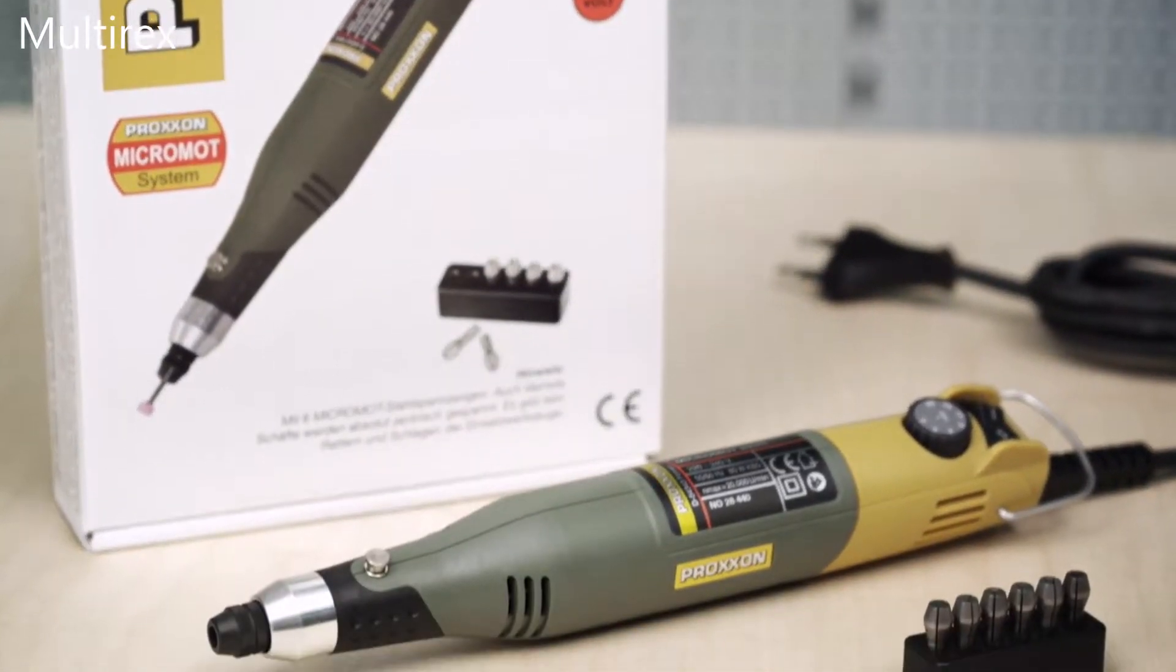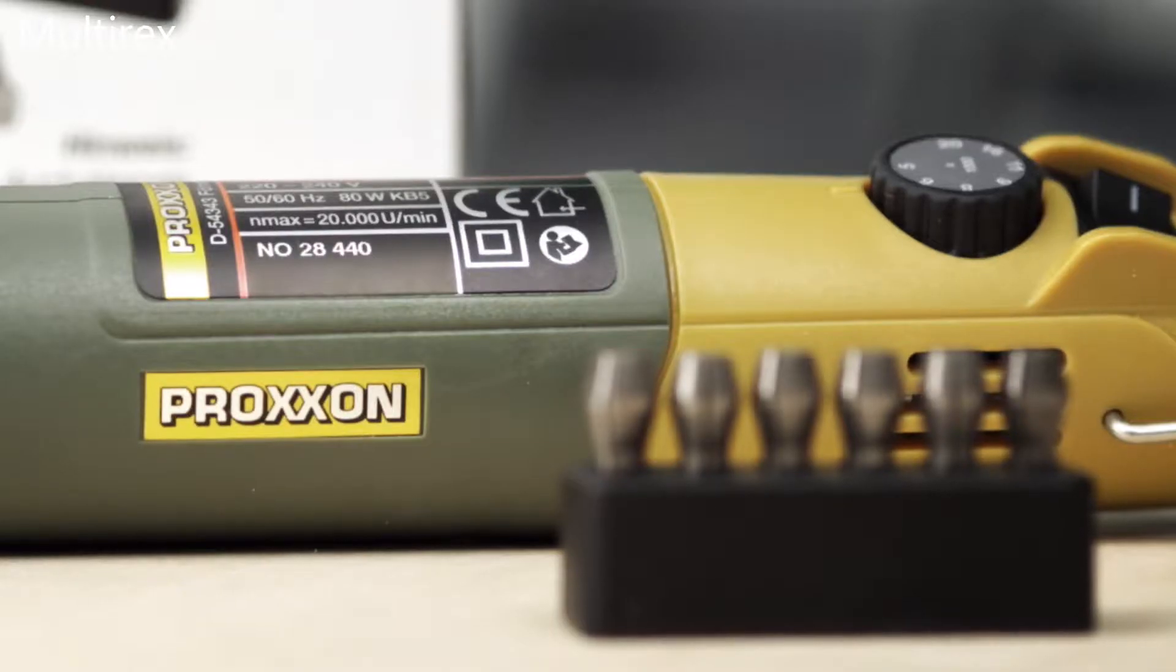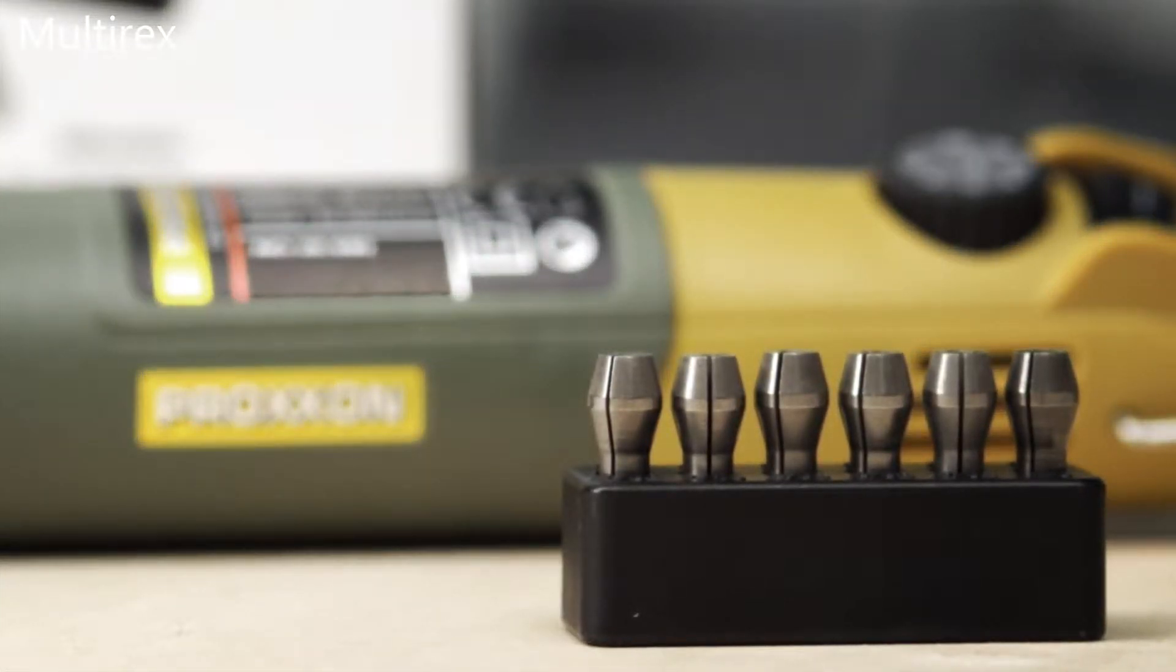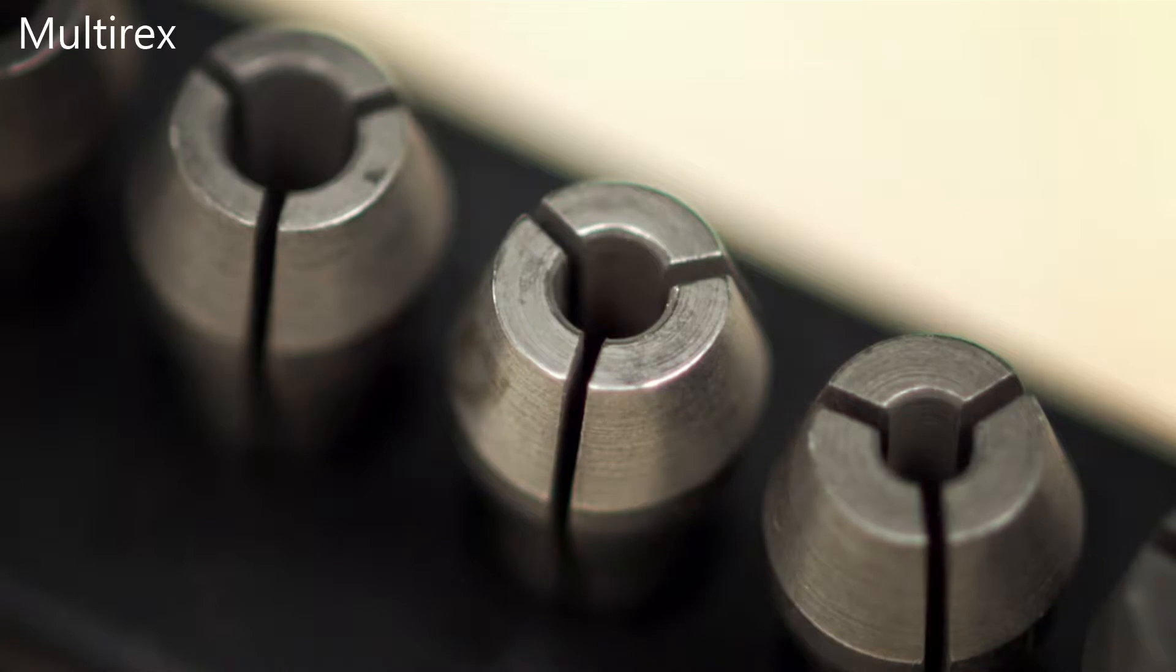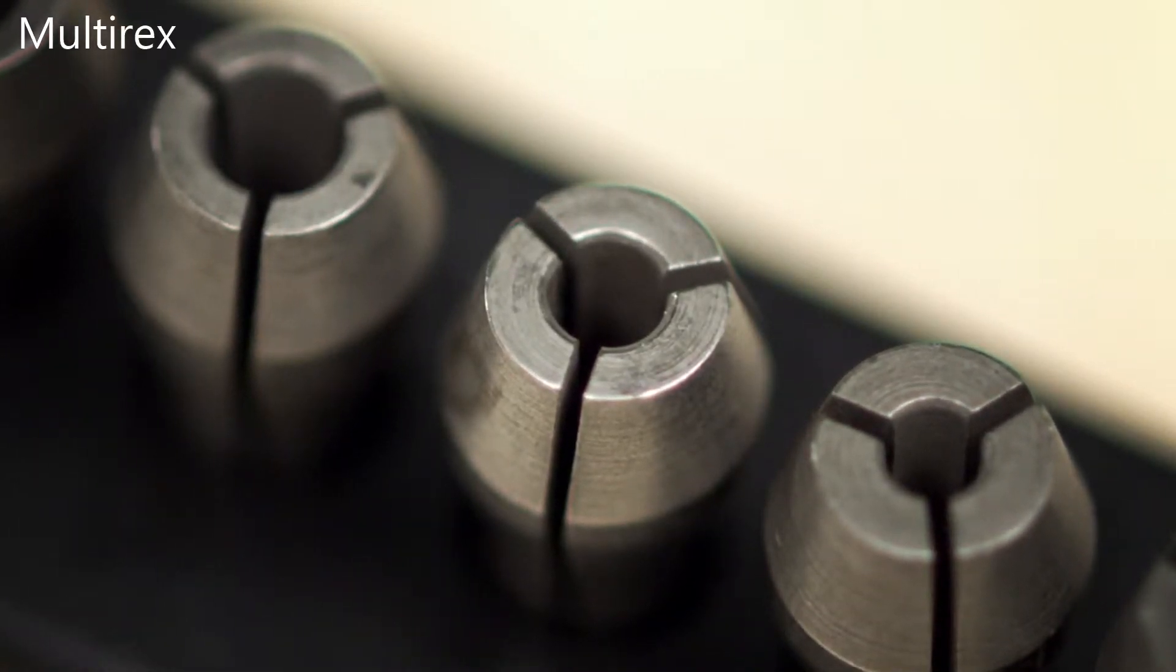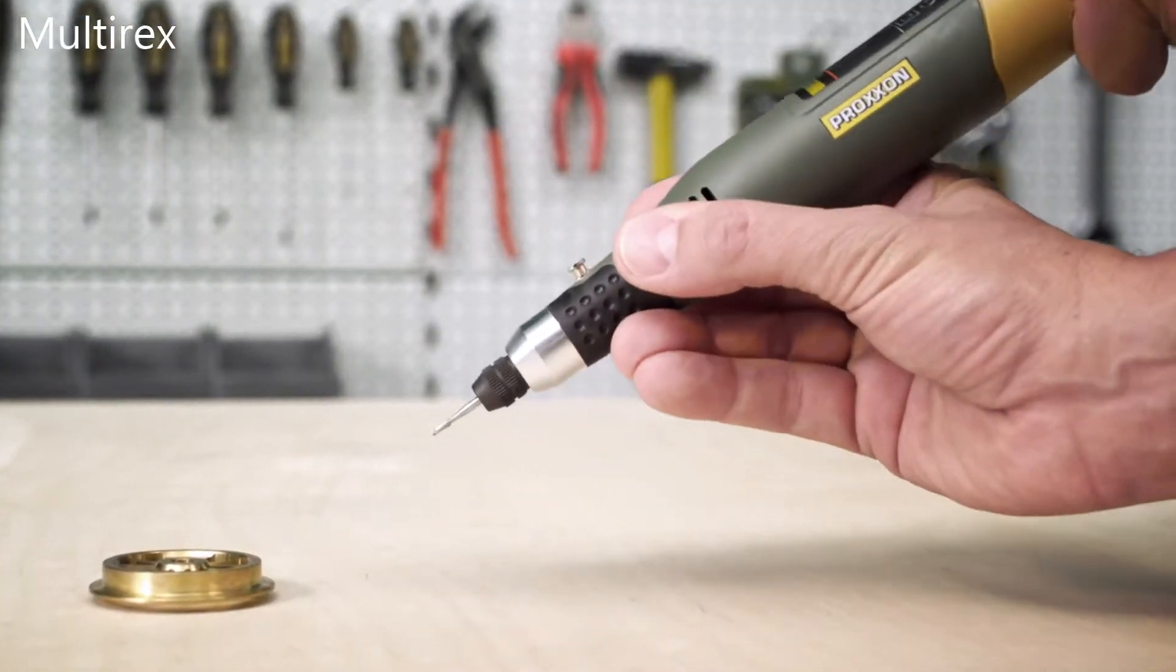Included is a set of six high precision collets which are suitable for use with a variety of accessories. Our special hardened steel collets have triple slits. This provides maximum support and optimal concentric accuracy of the bits and cutters.